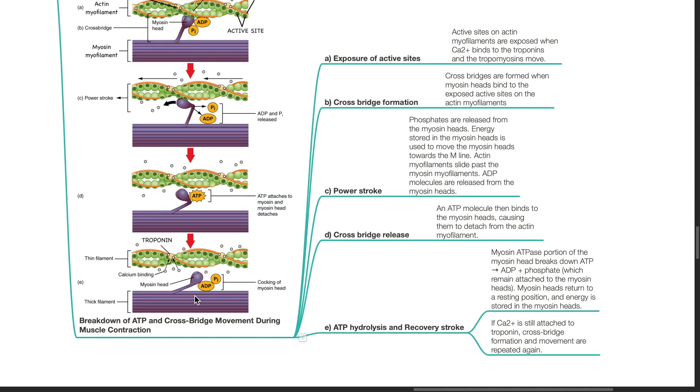ATP hydrolysis and recovery stroke. Myosin ATPase portion of the myosin head breaks down ATP to ADP and phosphate which remain attached to the myosin heads. Myosin heads return to a resting position and energy is stored in the myosin heads. If calcium is still attached to troponin, cross bridge formation and movement are repeated again.